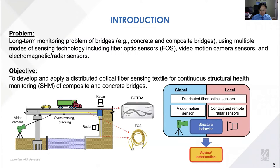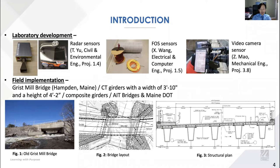Among these sensing technologies, distributed fiber optic sensors and video motion camera sensors are capable of capturing the global response of bridges, while electromagnetic sensors capture the local response. We will also use conventional strain gauges for calibrating fiber optic sensors and establishing a reliable baseline. Distributed optical fiber sensors and strain gauges measure static response, while video camera motion sensors and strain gauges measure dynamic response. Electromagnetic sensors are from project 1.4, fiber optic sensors from project 1.5, and video motion camera sensors from project 3.8.